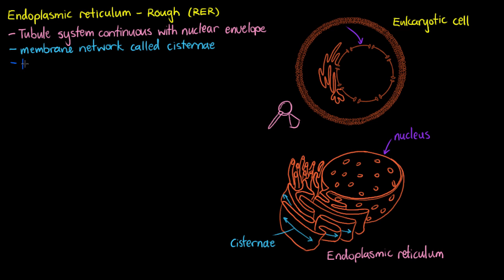We refer to the inside area — the inside surface of that cisternae — as the lumen. That's going to be the area that is enclosed within the structure. So the actual inside of the organelle itself is the lumen of the rough endoplasmic reticulum.